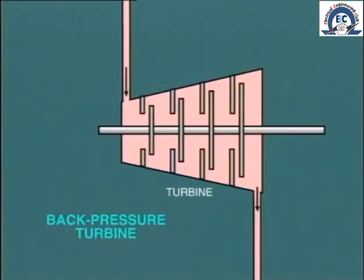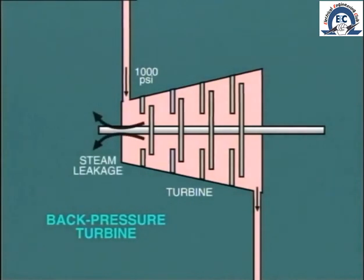Remember, there is very hot steam at substantial pressure inside the casing at the high-pressure end of the machine. So there is the potential for a considerable amount of this hot steam to leak out through the space between the rotating shaft and the casing.